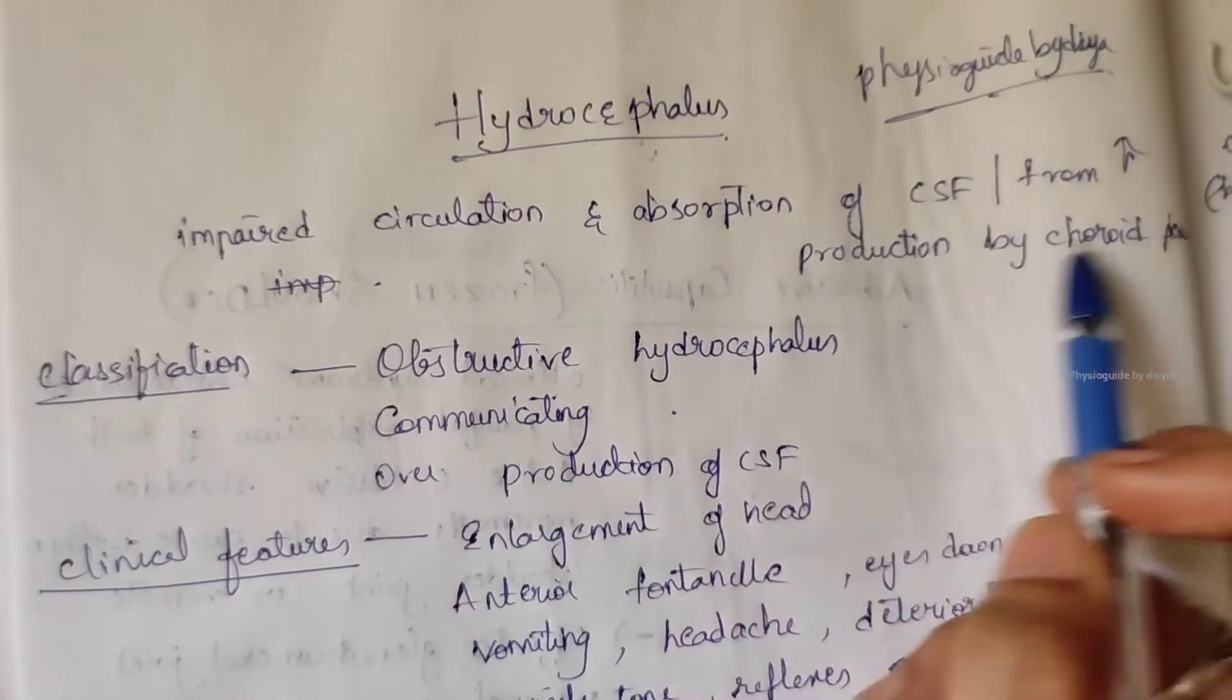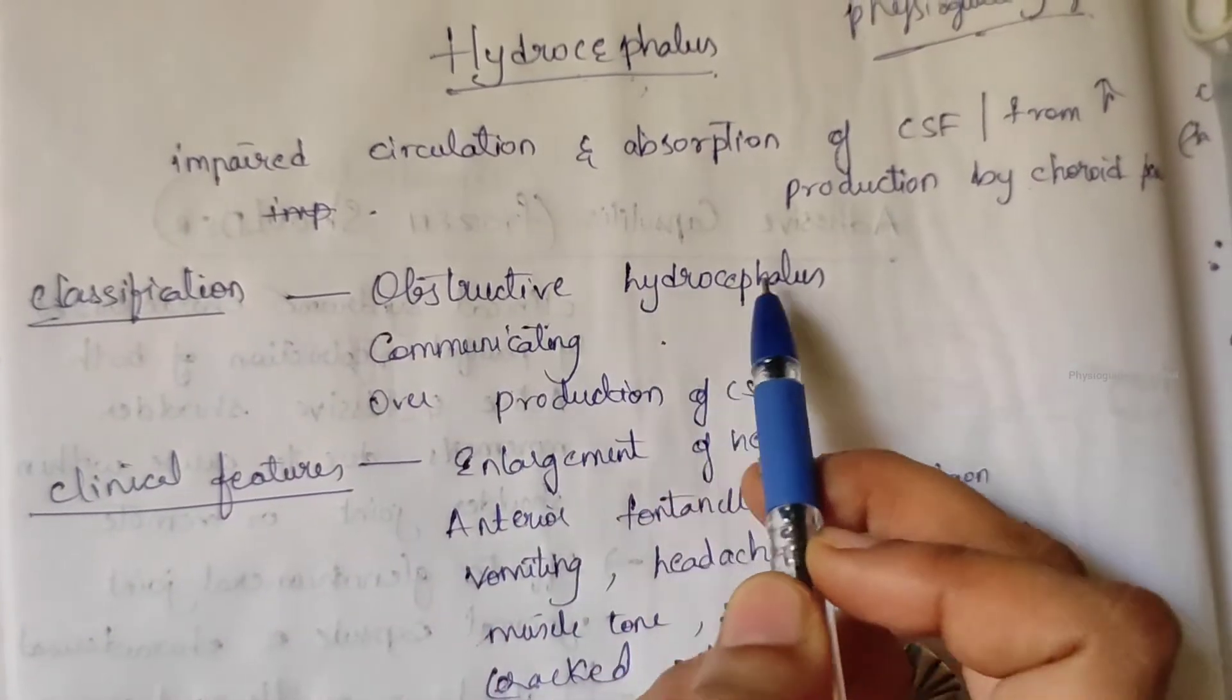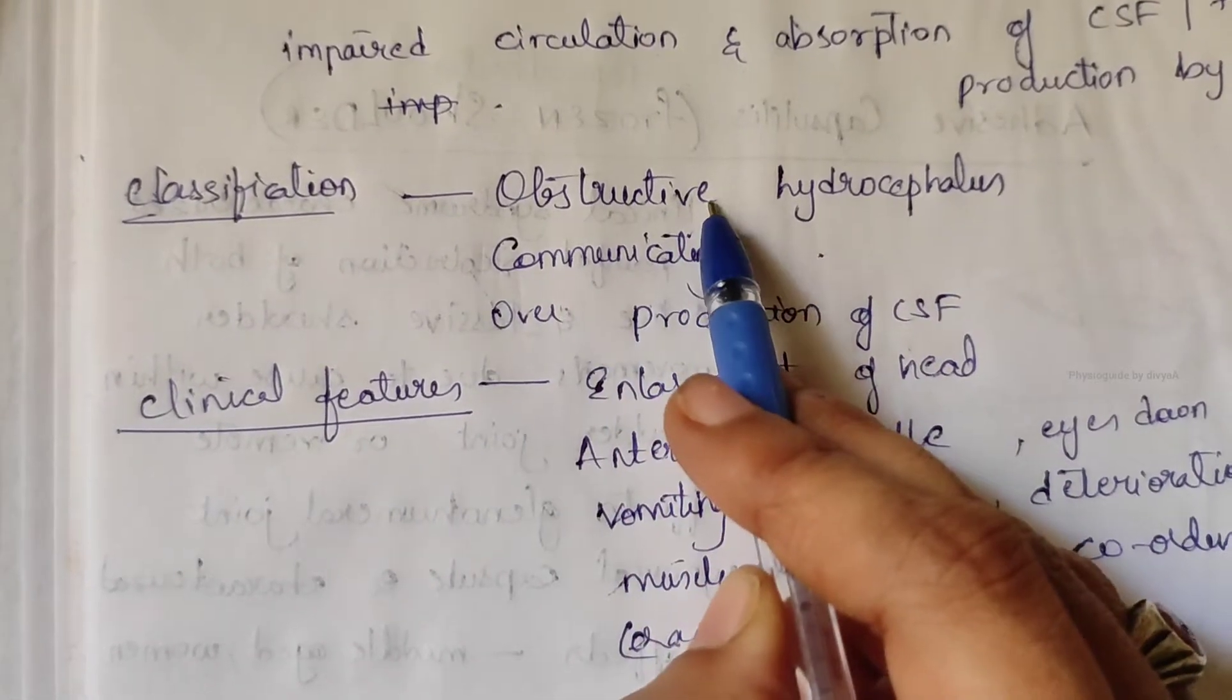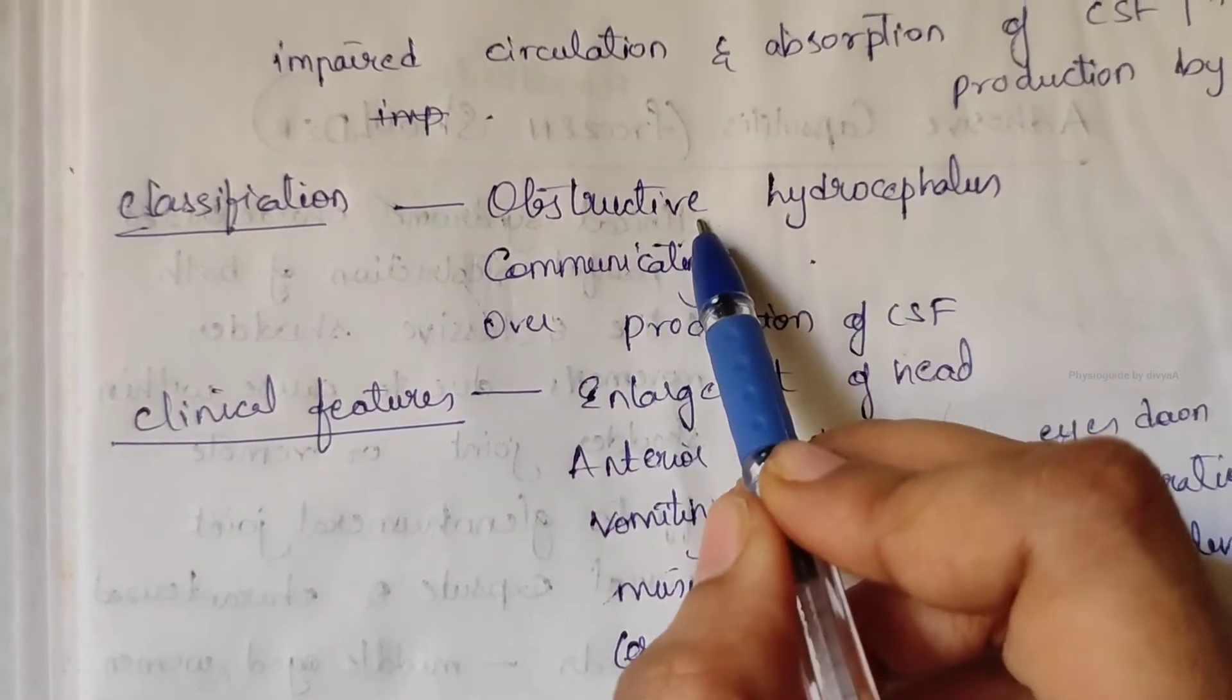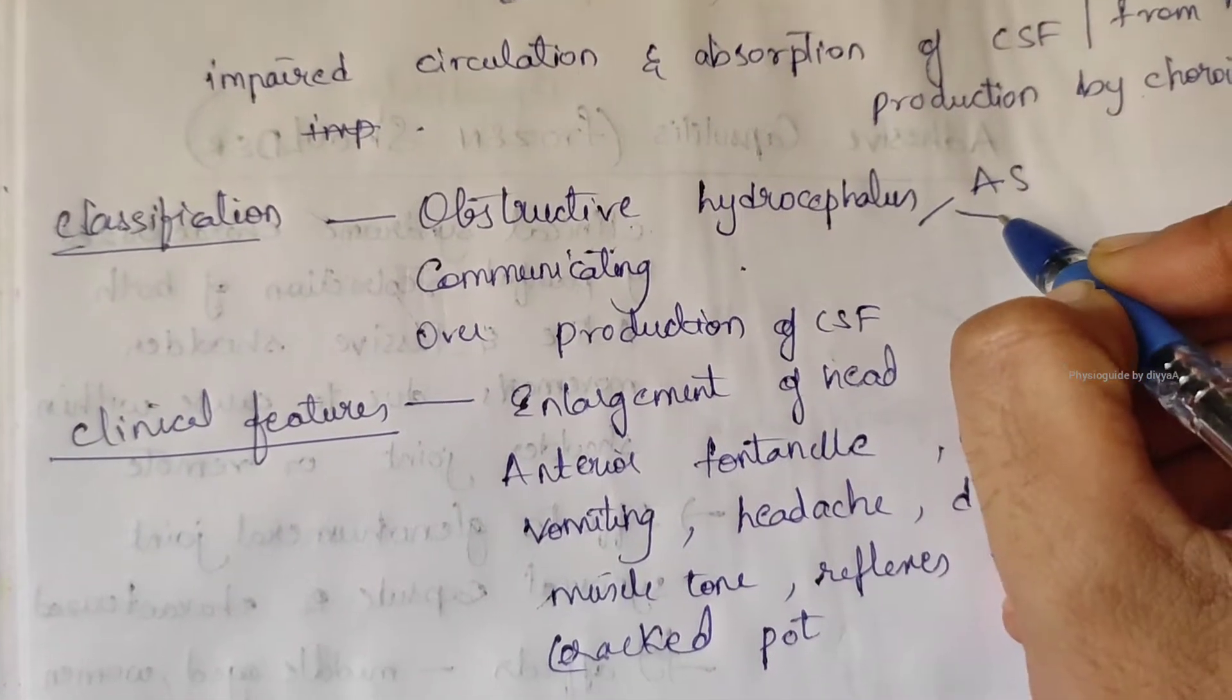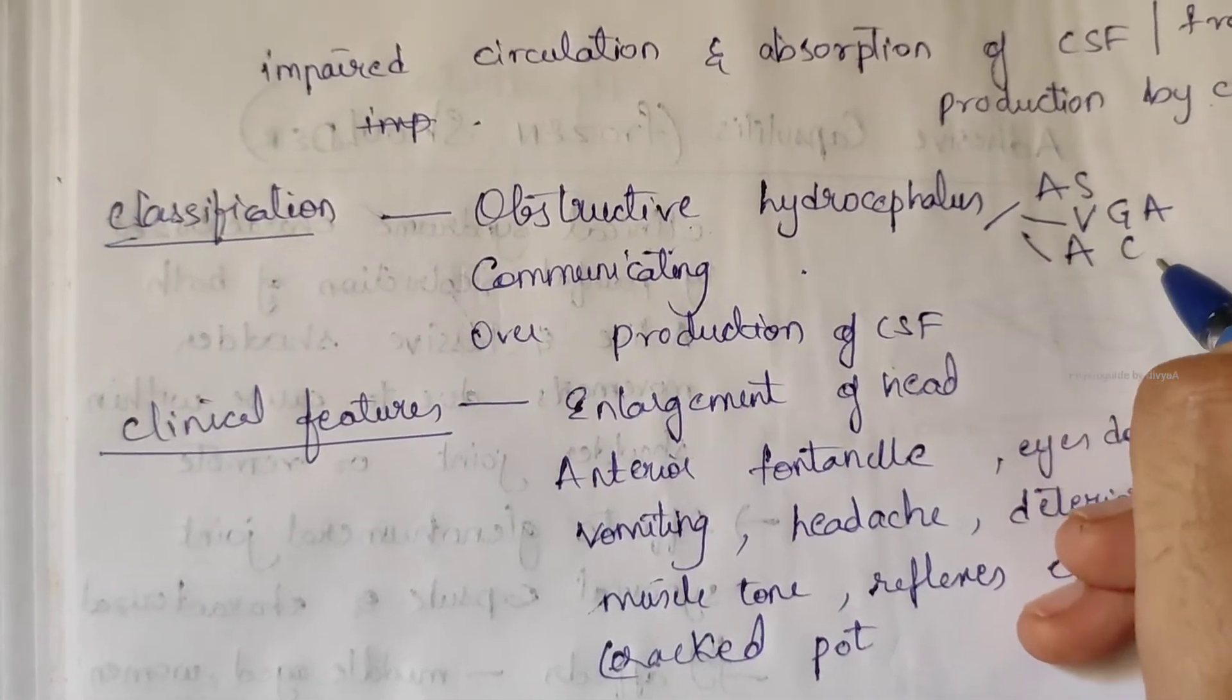Classification: it is divided into obstructive hydrocephalus. From the name, obstruction means there is an obstruction to the circulation of cerebrospinal fluid either within the ventricles or aqueduct. It is caused by aqueductal stenosis, vein of Galen aneurysm, or Arnold-Chiari malformation.